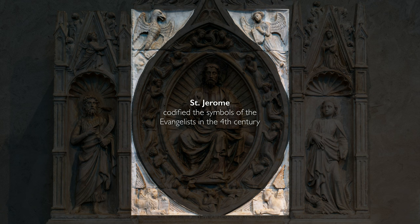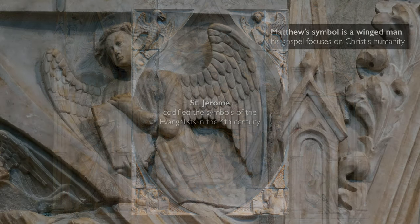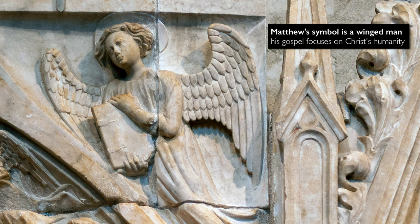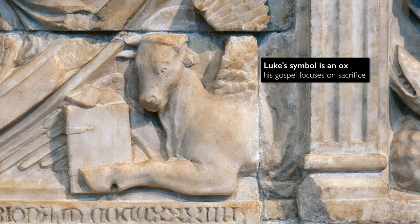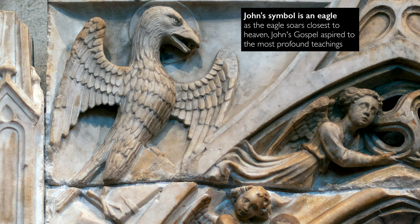In the fourth century, Saint Jerome codified these symbols for the four evangelists, and he does provide a rationale for each. He says that Matthew appears as a winged man because his gospel begins with how Christ's ancestry could be traced back to King David. He describes there was a shrieking in the wilderness, and this is the lion that we see for Saint Mark. Luke is the ox because his gospel opens with an account of sacrifice, and oxen were often animals that were sacrificed. And with John, there was this idea of an eagle soaring to heaven, getting the closest to God — that is how the eagle comes to be associated with John.